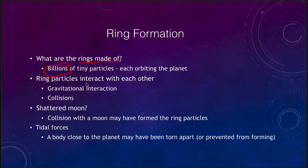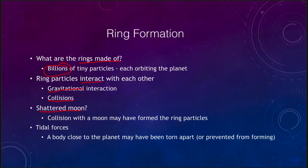The ring particles interact with each other by gravity, which keeps them together, and through collisions as they orbit, giving us the structures we see within the rings. Could these be a shattered moon? A collision with a moon might have formed the ring particles — if a large object crashed into a moon, and these Jovian planets all have lots of moons, that could have expelled a lot of ring particles out into space, captured in a ring.